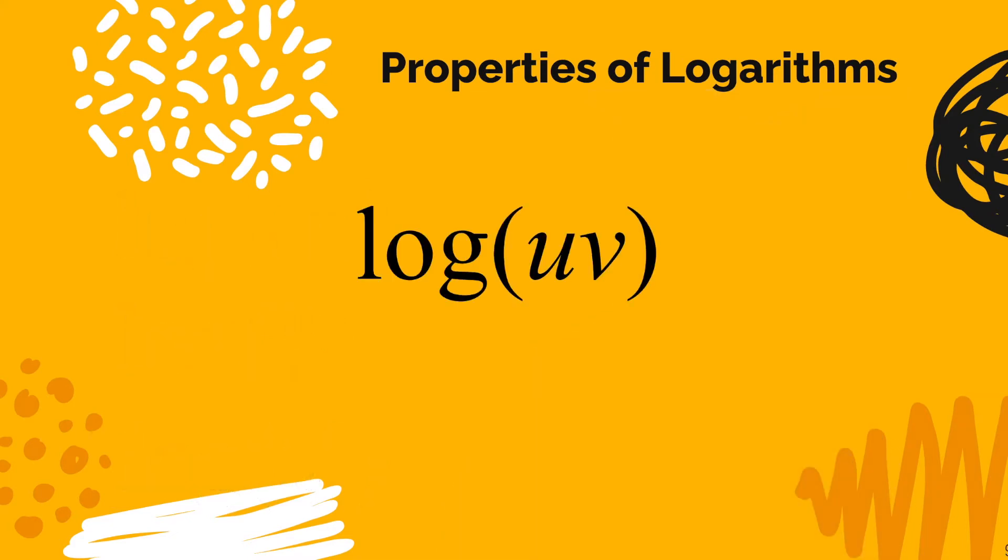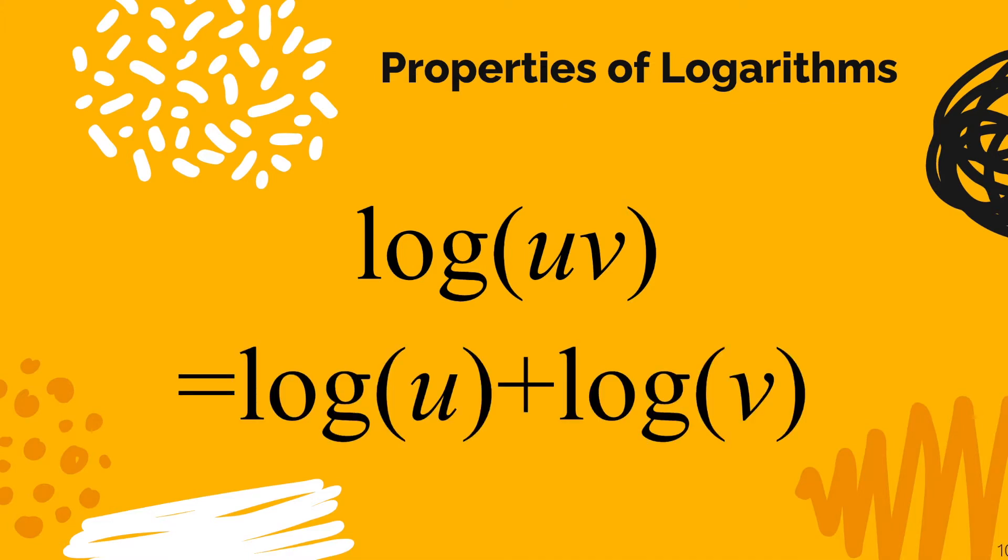The first property we're going to look at is when you have a product on the inside of a logarithm. So in this case log of uv. It turns out it simplifies to be the sum of two separate logs log u plus log v. So be careful when you have the multiplication inside a logarithm. It's actually the addition of two separate logarithms.